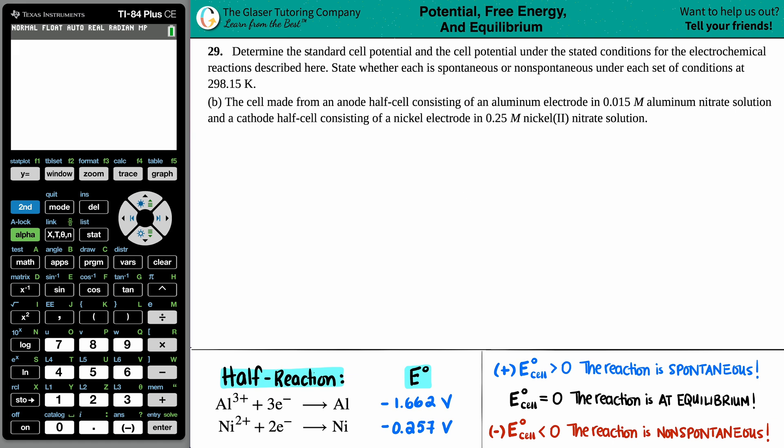Number 29, determine the standard cell potential and the cell potential under the stated conditions for the electrochemical reactions described here, and then state whether each is spontaneous or non-spontaneous under each set of conditions at 298.15 Kelvin. And then we have letter B. So in this case, they say the cell made from an anode half-cell consisting of an aluminum electrode in 0.015 molar aluminum nitrate solution and a cathode half-cell consisting of a nickel electrode in a 0.25 molarity nickel(II) nitrate solution.